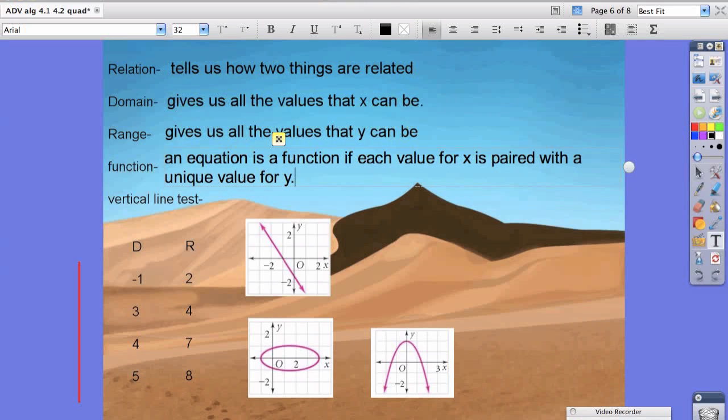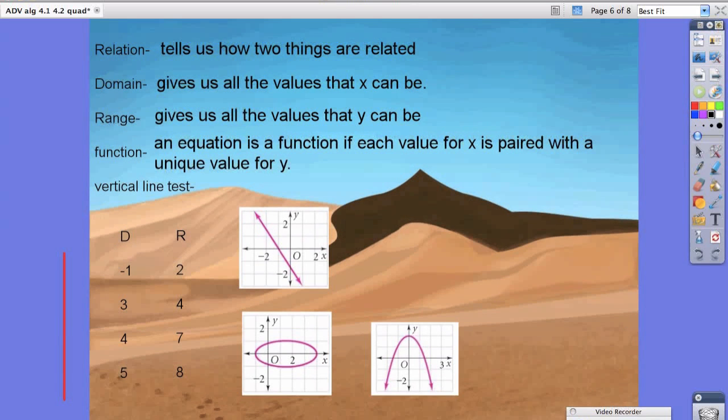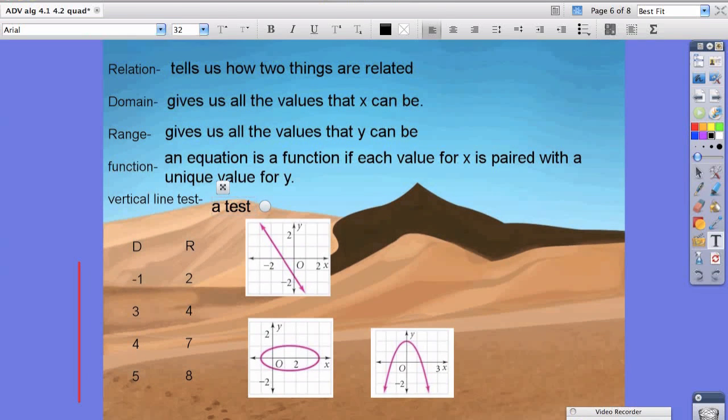We're going to give you a couple different examples to help explain what a function is. A vertical line test, before we move on, is a test to determine if a graph is a function or not. Now what we're going to do is we're going to look at a couple different graphs to help us determine that.